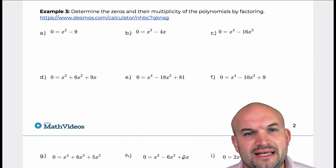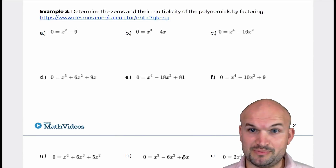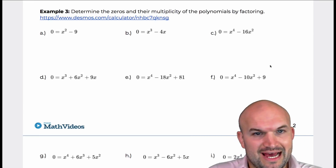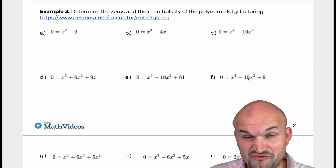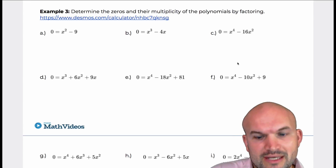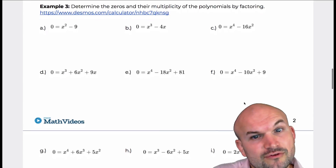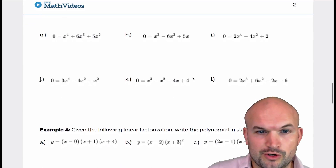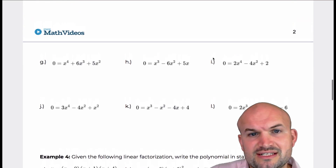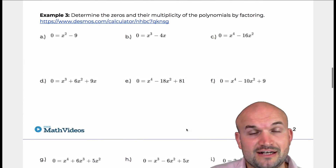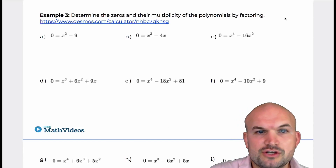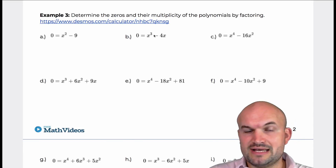In example three, I want to show you how to determine the zeros and the multiplicity by factoring. When we have a linear factorization, it's very easy to identify the zeros as well as the multiplicity. None of these are written as a product of linear factors, so our main objective is to write them as a product of linear factors so we can identify the zeros and multiplicity.